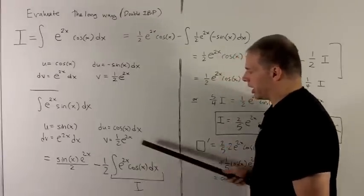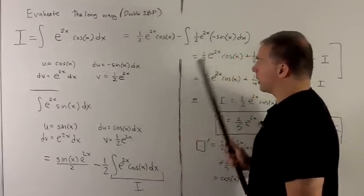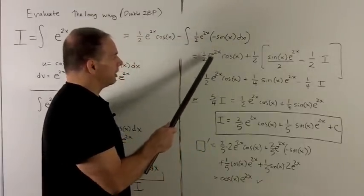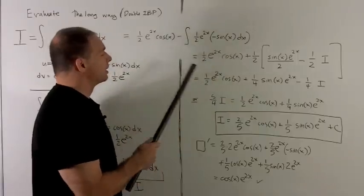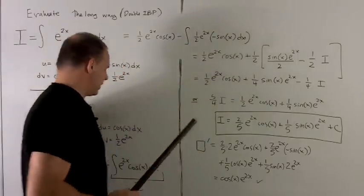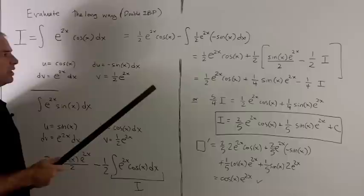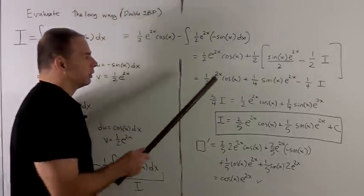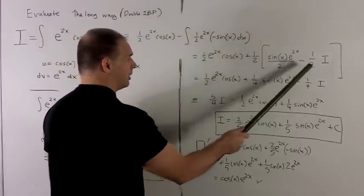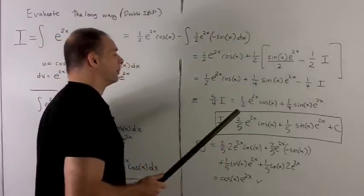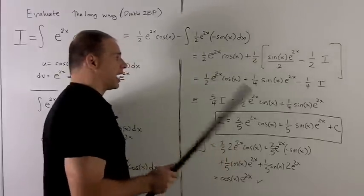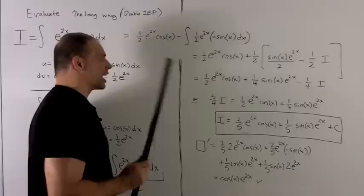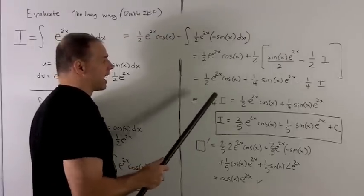So let's take this and replace it in our line going across. So here, this is going to be a half e to the 2x cosine x. We have our plus a half, and then we're just going to stick this in. So I have my sine x e to the 2x over 2 minus one half i. We distribute the half, that changes to a quarter, that changes to a quarter also. Now if you notice, I have an i on this side and a quarter i on this side. So if I bring this over to the other side, to the left side, I'm going to get 5 fourths i.